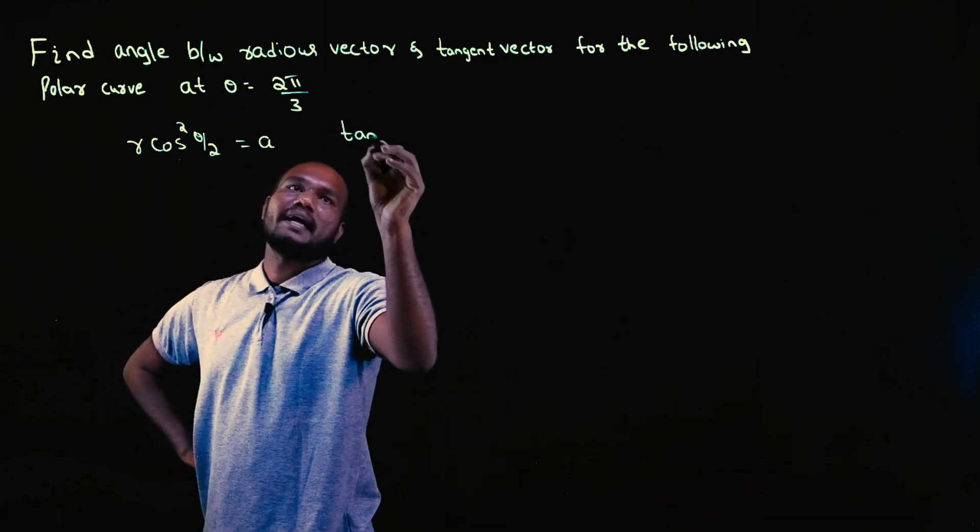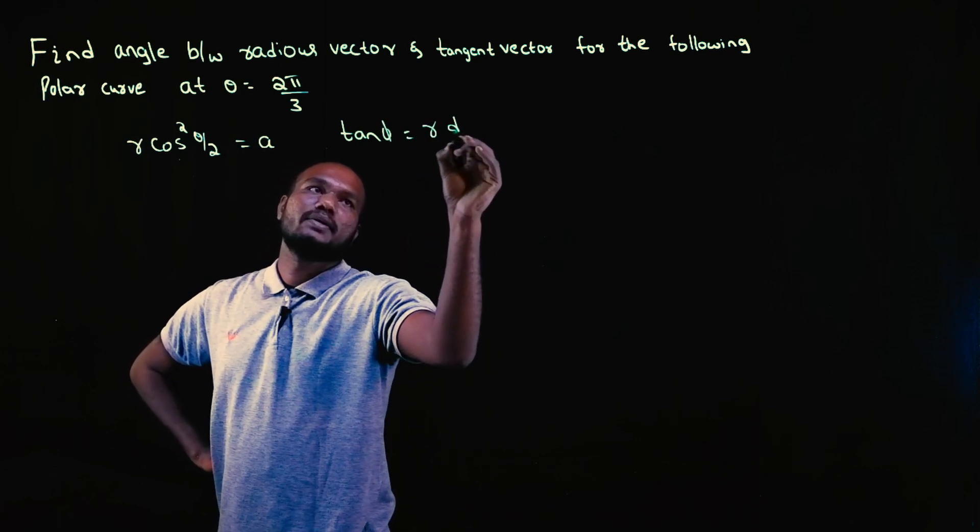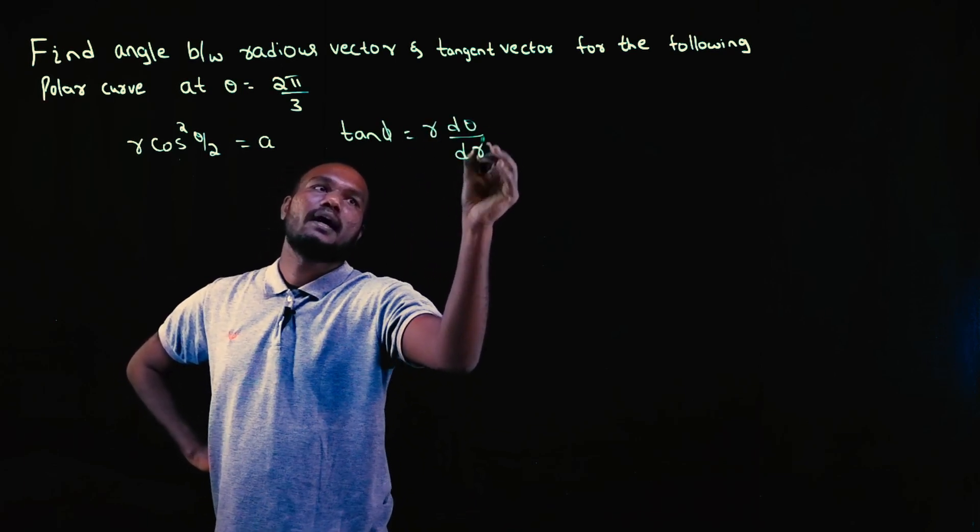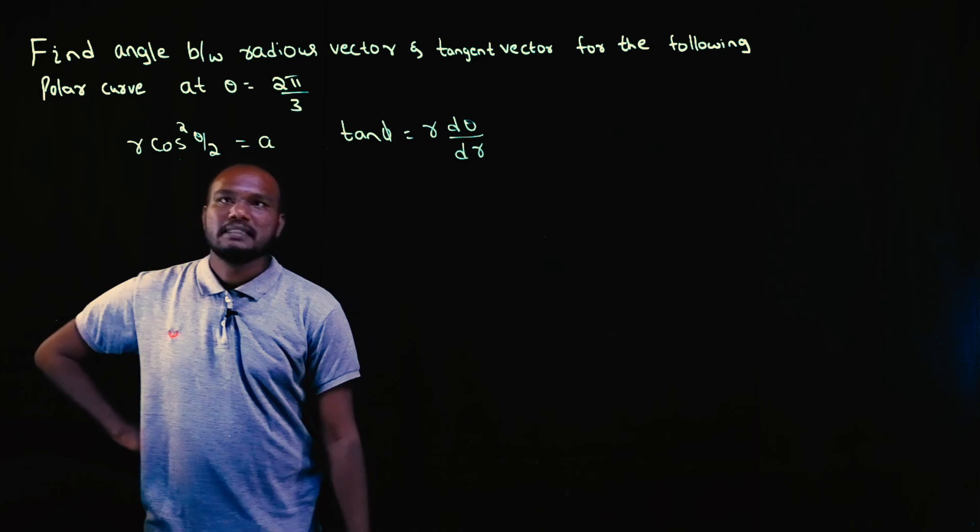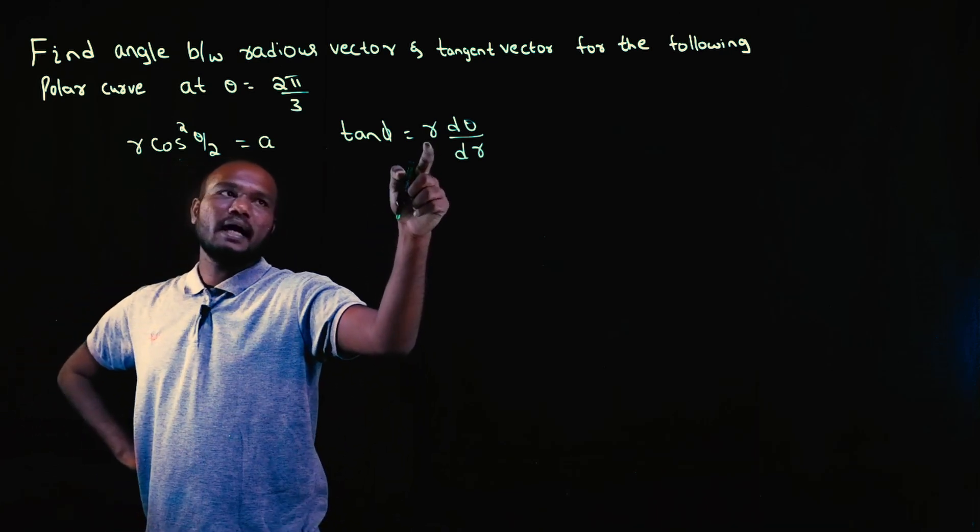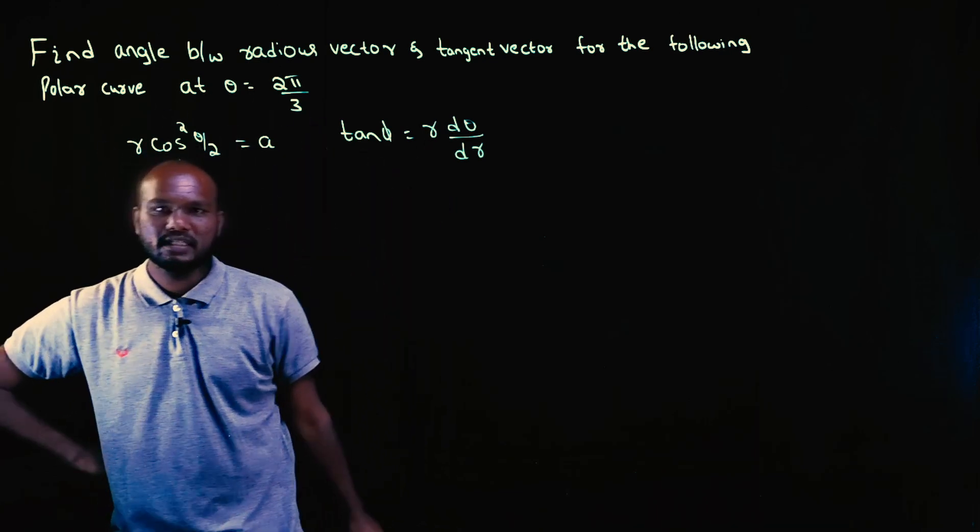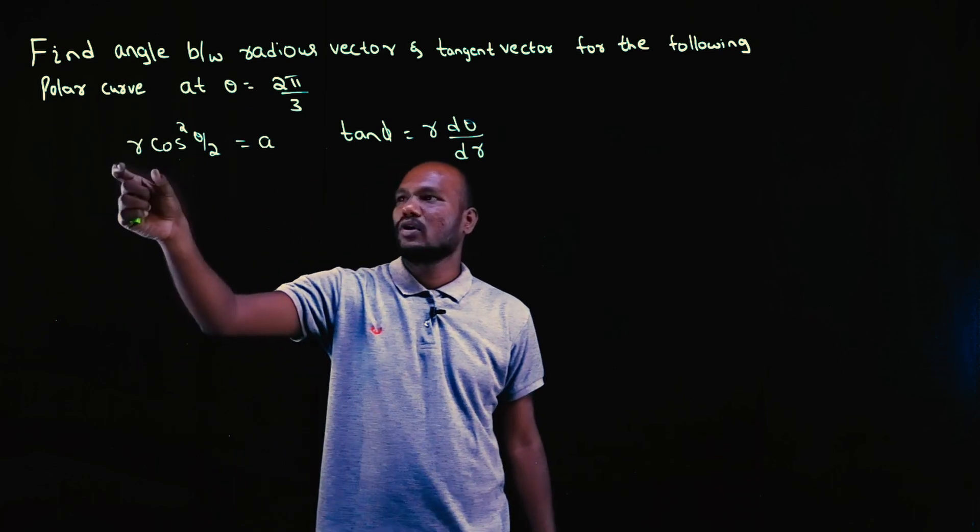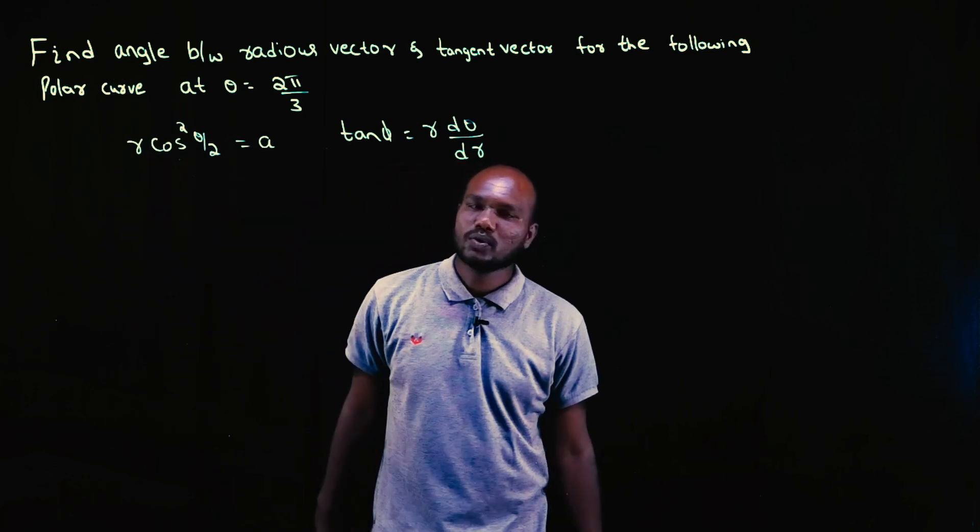So what is the formula? Tan phi is equal to R into d theta upon dR. This is the formula. See now, R, I need R, but it is a clutter here, right? There are so many numbers here, I cannot just take the R squared directly from here.